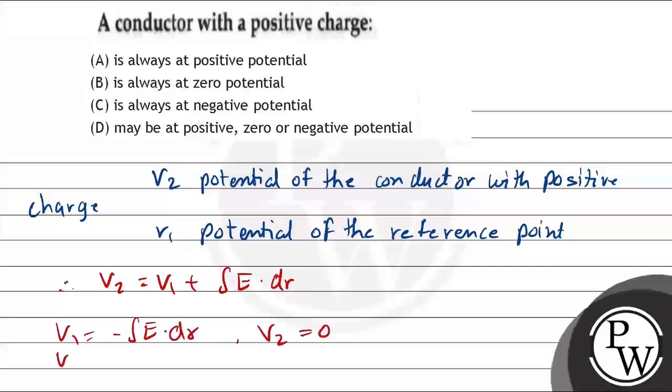If V1 is greater than integral E dot dR, then V2 will be positive, which is greater than 0.